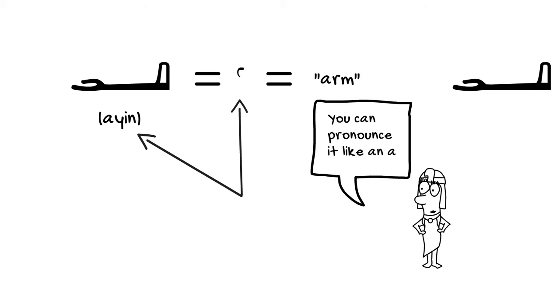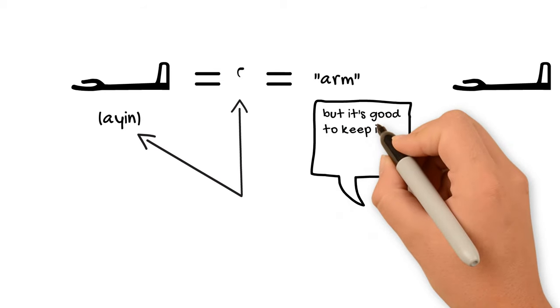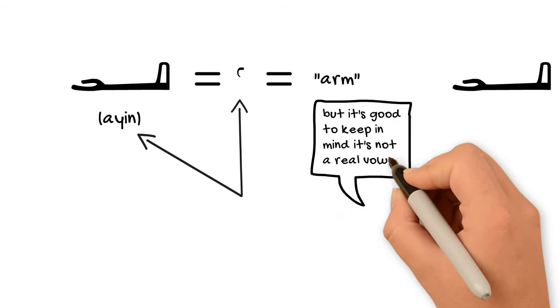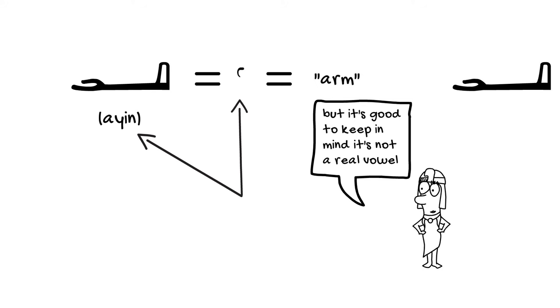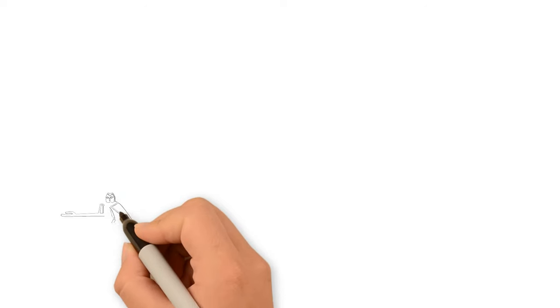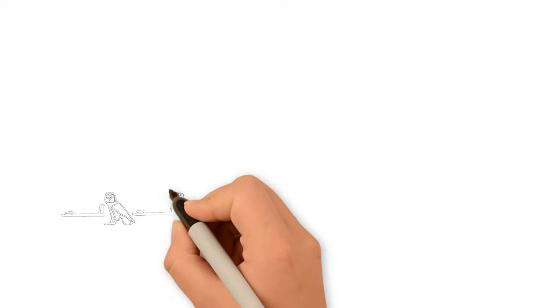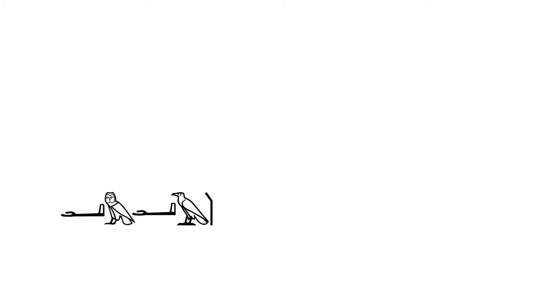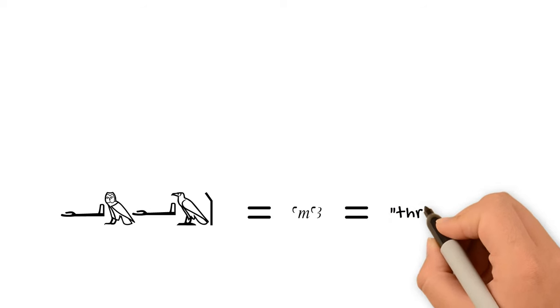However, for simplicity sake, English speakers and other people who speak European languages generally pronounce this really like a vowel A, and this helps us actually be able to say Egyptian words aloud even when we don't know where the vowels actually laid and what exactly they were. So for example, you can use the ayn, this arm hieroglyph to spell the word for to throw, which is spelled with an ayn, an em, an ayn, and an ayn, and an aleph, and then a bent stick. Usually English speakers just pronounce this as a-ma-ah or something like that, or a-ma-ah.